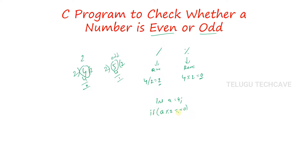That is the if condition. So if single equal to, that is the assignment operator. If double equal to, that is the comparison operator. So here, a is 4, so 4 % 2 equal to equal to 0. Because if the condition is true, we will print in this block.